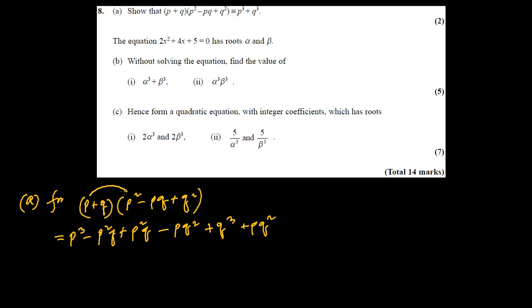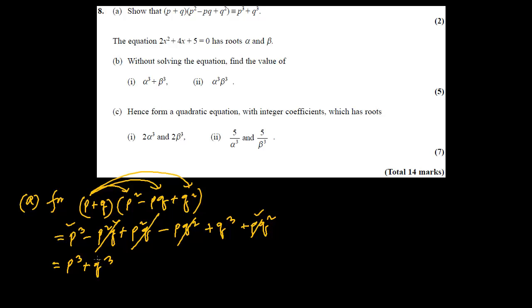This multiplied by this gives the first term, this by this gives the second, this by this is the one I missed initially, then this by this, then this one. Now p²q and p²q cancel, and pq² and pq² cancel. So we have p³ + q³.